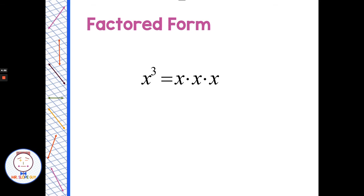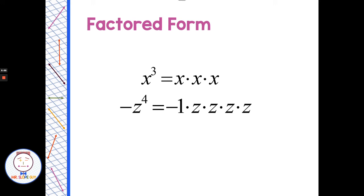Factored form: factors are just numbers being multiplied, so x times x times x times x is factored form. Exponential form is when we use an exponent. If I have negative z to the fourth, the 4 only applies to the z — so z to the fourth is z times z times z times z. That negative in front is like having a negative 1. The 4 does not apply to the coefficient unless it's in parentheses. In this case it's not, so the 4 applies to the z, not to the negative.